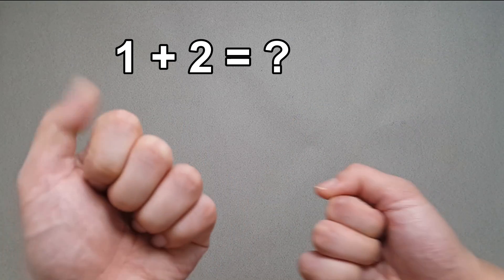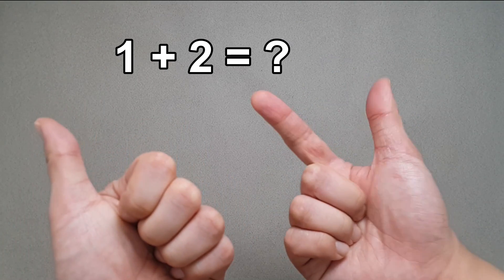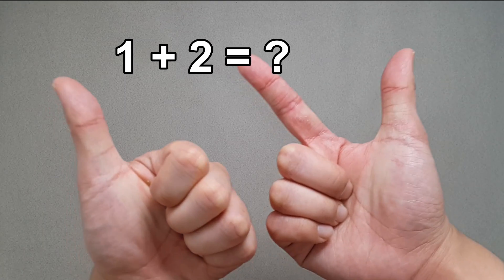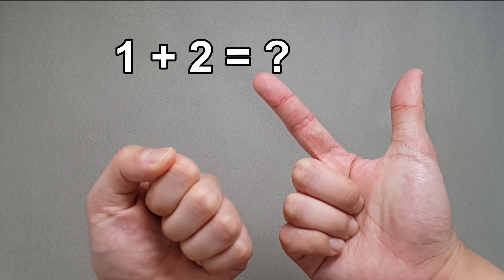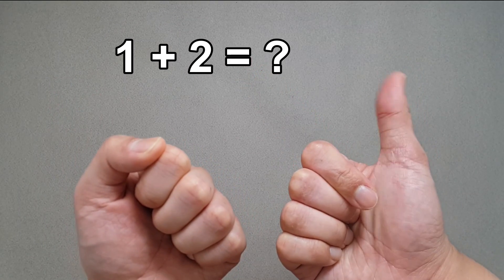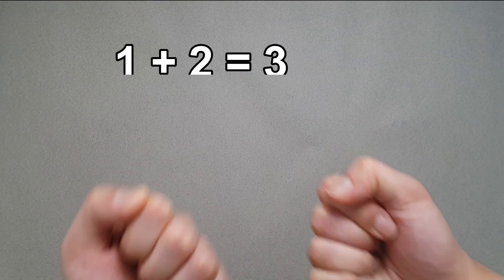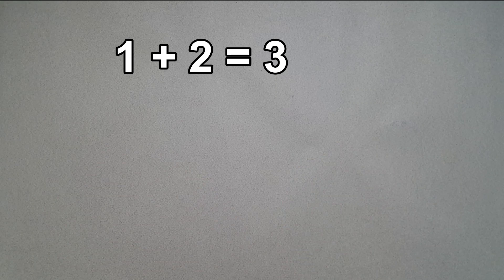What is one plus two? One finger. Two fingers. Let's count it. One, two, three. So one plus two equals three.